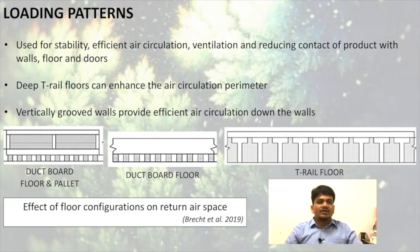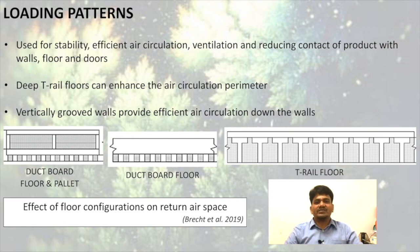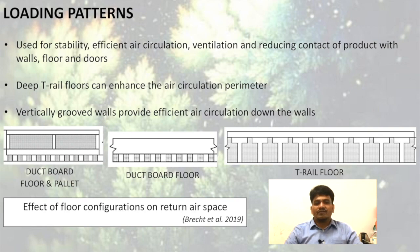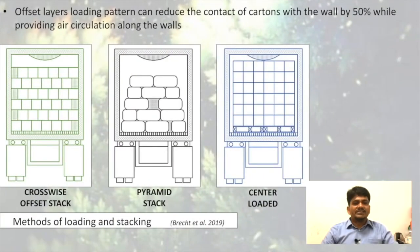Loading patterns are also important because the pattern affects energy consumption in the transportation process. Loading patterns are used for stability, efficient air circulation, ventilation, and reducing contact of product with walls, floors, and doors. Deep T-rail floors can enhance air circulation. Perimeter vertically grouped walls provide efficient air circulation down the walls. We can see the effect of floor configurations — board floor palette versus T-rail floor — on returned air space.